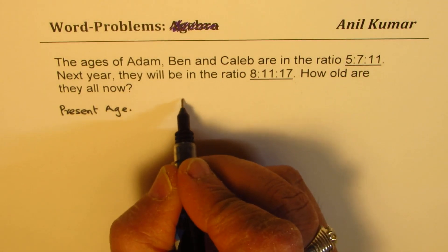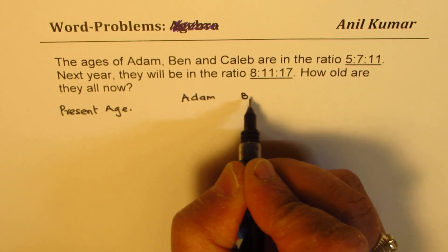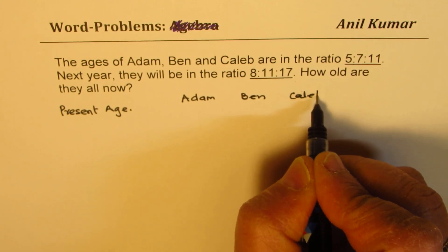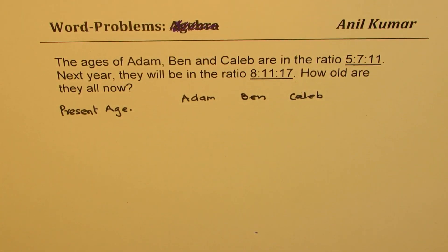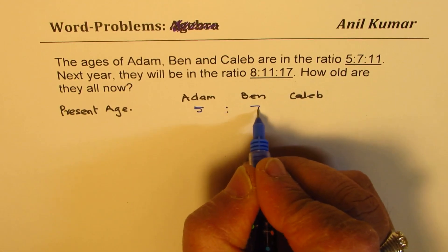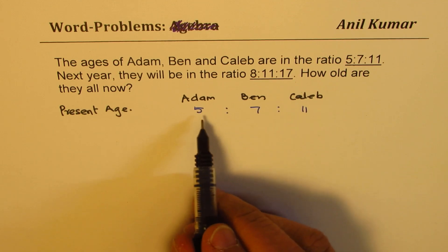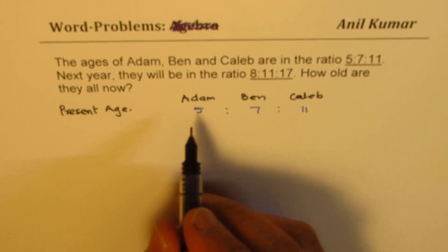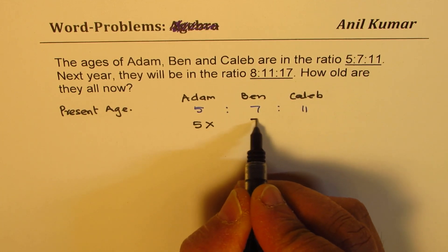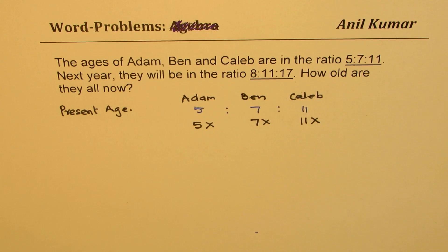The three persons involved are Adam, Ben and Caleb. Since the ratio is 5:7:11, it means they are all multiples of some number. So it could be taken as 5x, 7x and 11x. This becomes their present age.